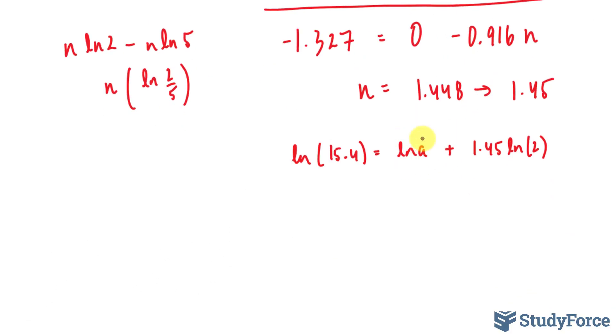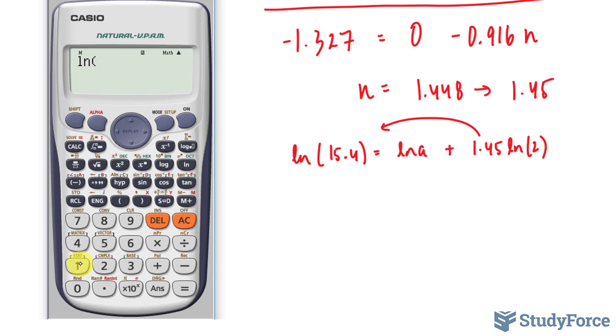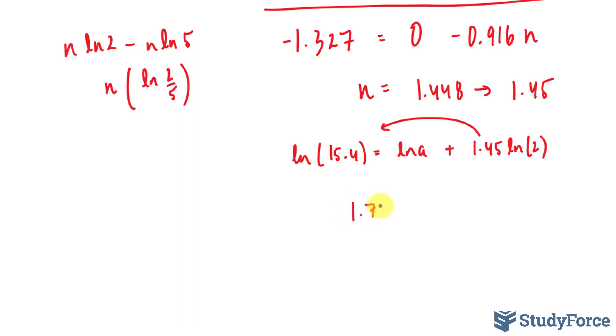We can solve for a quite easily. Bring this over where we have ln of 15.4, this number, minus that number. 1.45 ln 2. This gives us 1.729. 1.729 is equal to ln a.